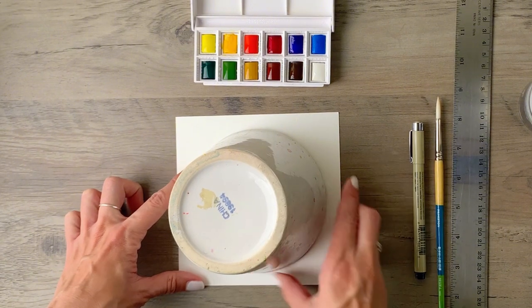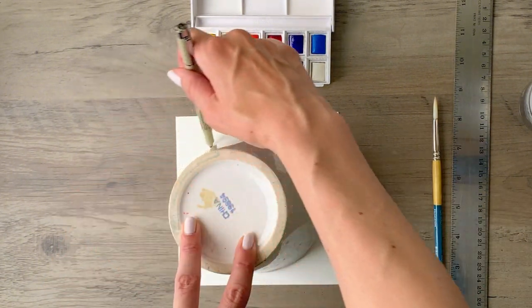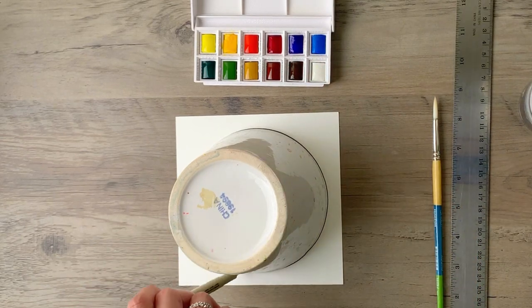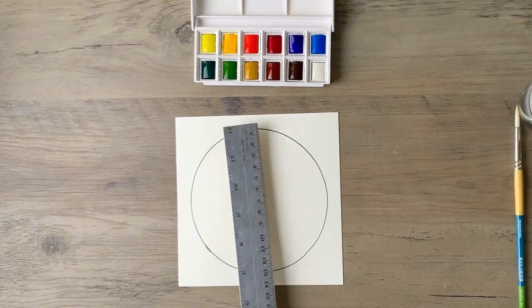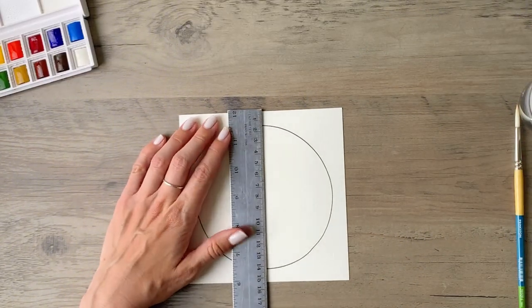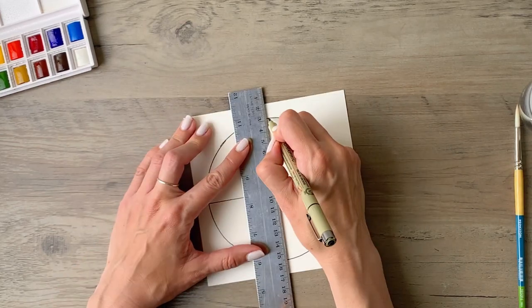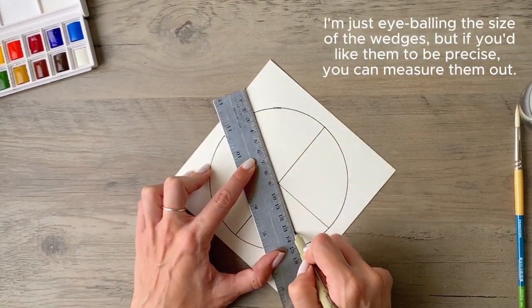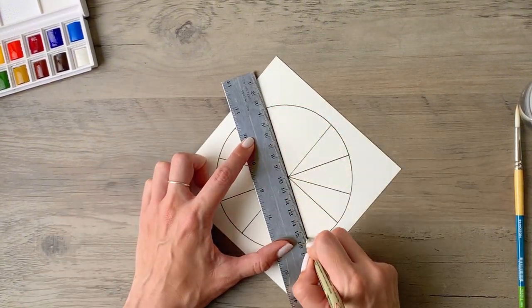And then you'll take one of your sheets of watercolor paper and trace any circular object. This is just a flower pot turned paint pot and get a circle onto that paper and then take your ruler or straight edge and we're going to create 12 wedges. So you'll divide the circle into four sections and then each of those sections should have three smaller wedges within it.